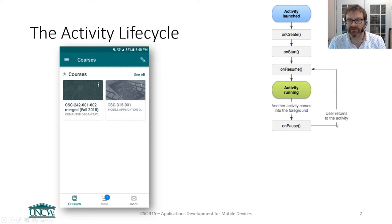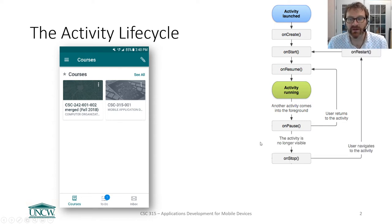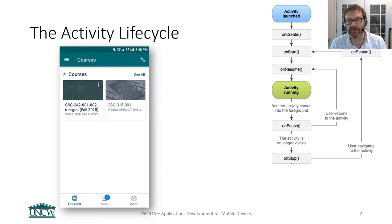This only happens if the user comes back to your activity. Your activity could pause, but maybe the user forgets about it. If the activity goes away from the screen completely — for example, you're in your Canvas application and you switch over to Spotify or YouTube completely — in that case your activity's onStop method is called.